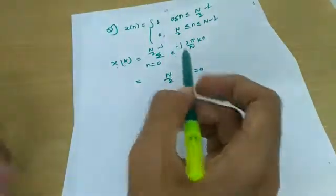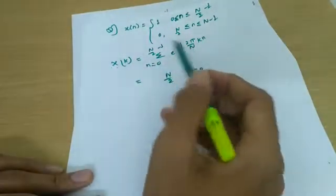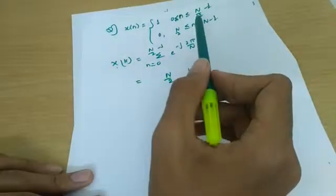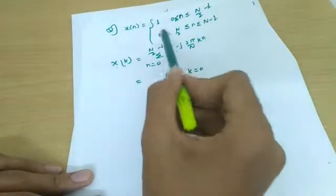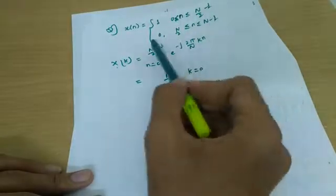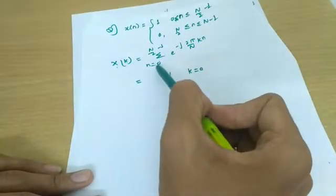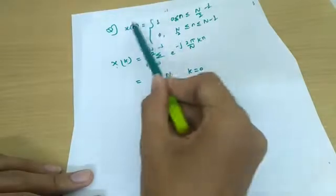x(k) is defined by the DFT formula. As per the definition, substituting for this limit, the value is 0, so we are left with only n equals 0 to n/2 minus 1, and x(n) is replaced by 1 in this limit.